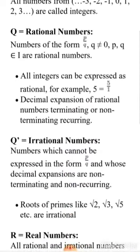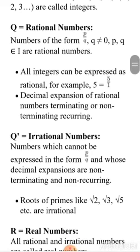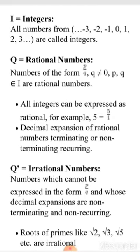The next definition is Integers. Before knowing integers, you must know what the negative of a whole number is. The negative of a whole number means: 3's negative is minus 3, 8's negative is minus 8, infinity's negative is minus infinity. So all numbers from minus infinity to plus infinity are called integers. In other words, integers are a set of all whole numbers together with their negatives.